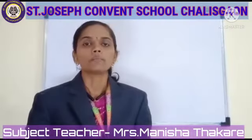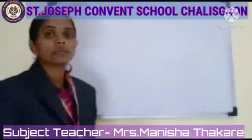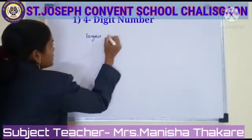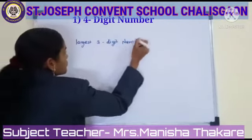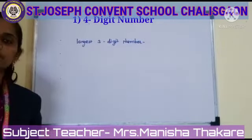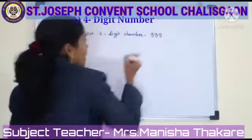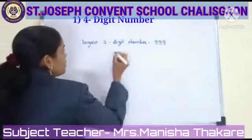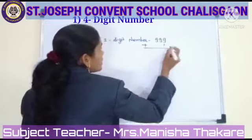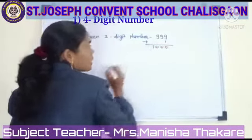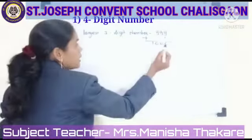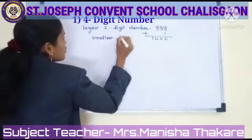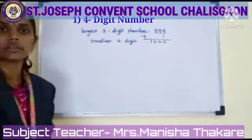Already in previous classes, you know up to 3-digit numbers. So how do we make a 4-digit number? Which is our largest 3-digit number? The largest 3-digit number is 999. When we add 1 to this largest 3-digit number, we get the smallest 4-digit number. We add 1, and it becomes 1,000 — that is 1, 10, 100, 1,000 — meaning we get a 4-digit number. So 1,000 is the smallest 4-digit number.